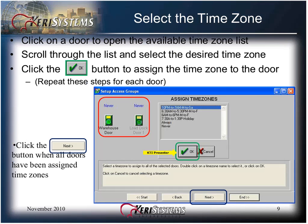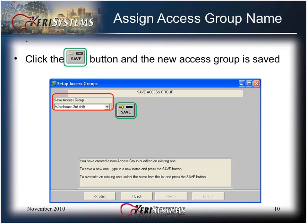Note that doors are assigned a Never time zone by default, and this must be changed or access to that door will not occur. Click the Next button to move to the next screen. Enter a descriptive name for the access group, then click the Save button. Names of the access group should be limited to 30 characters or less, including spaces.